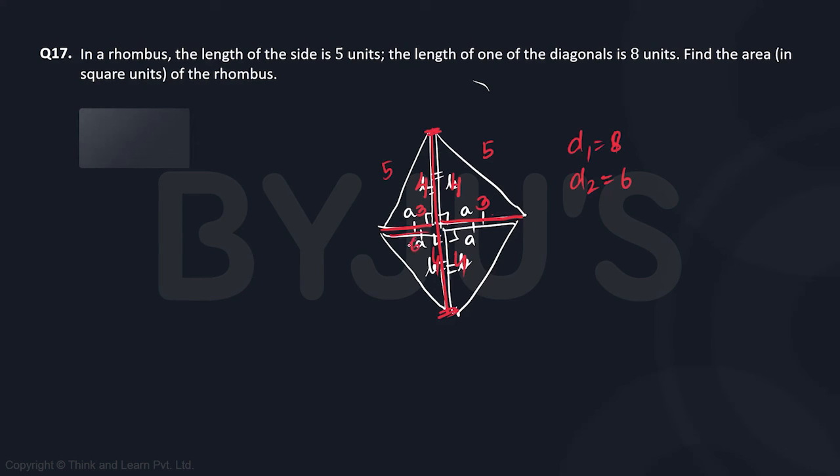Now, how do we solve area of any quadrilateral whose diagonals are perpendicular to each other? You simply do half into product of diagonals. Since we already know what the diagonals are, we can straight away use it. So half of 48 is going to be 24, so the answer is going to be 24.